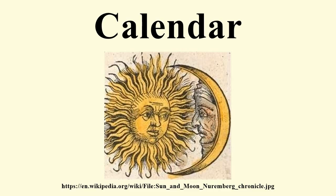With an annual drift of 11 or 12 days, the seasonal relation is repeated approximately each 33 Islamic years. Various Hindu calendars remain in use in the Indian subcontinent, including the Nepali calendar, Bengali calendar, Malayalam calendar, Tamil calendar, Vikrama Sambhat used in northern India, and the Shalivahana calendar in the Deccan states.